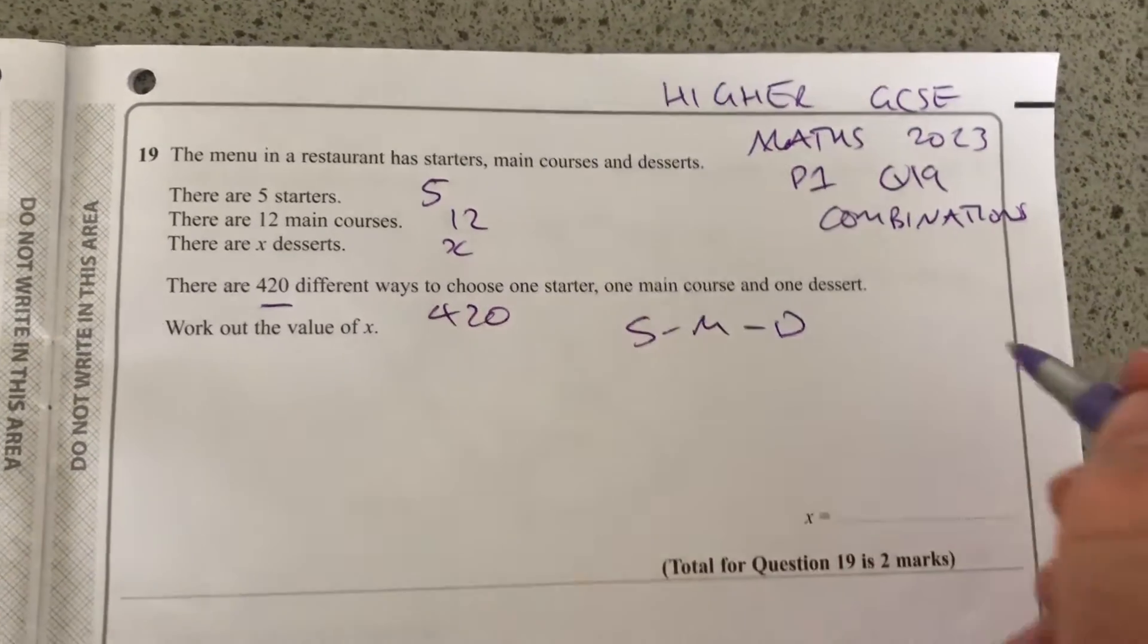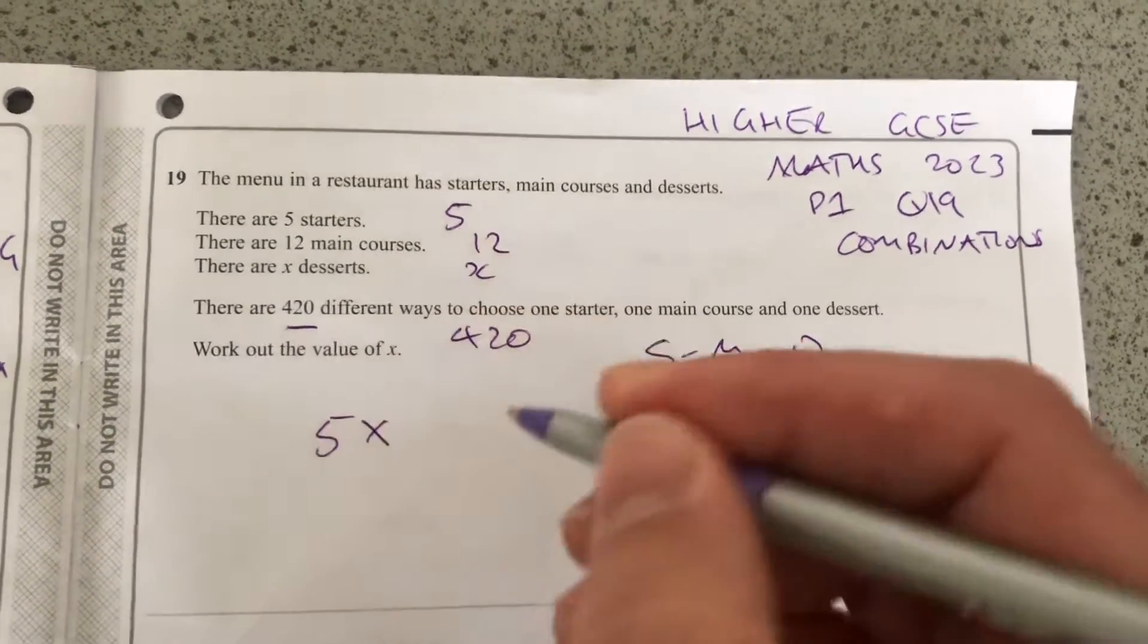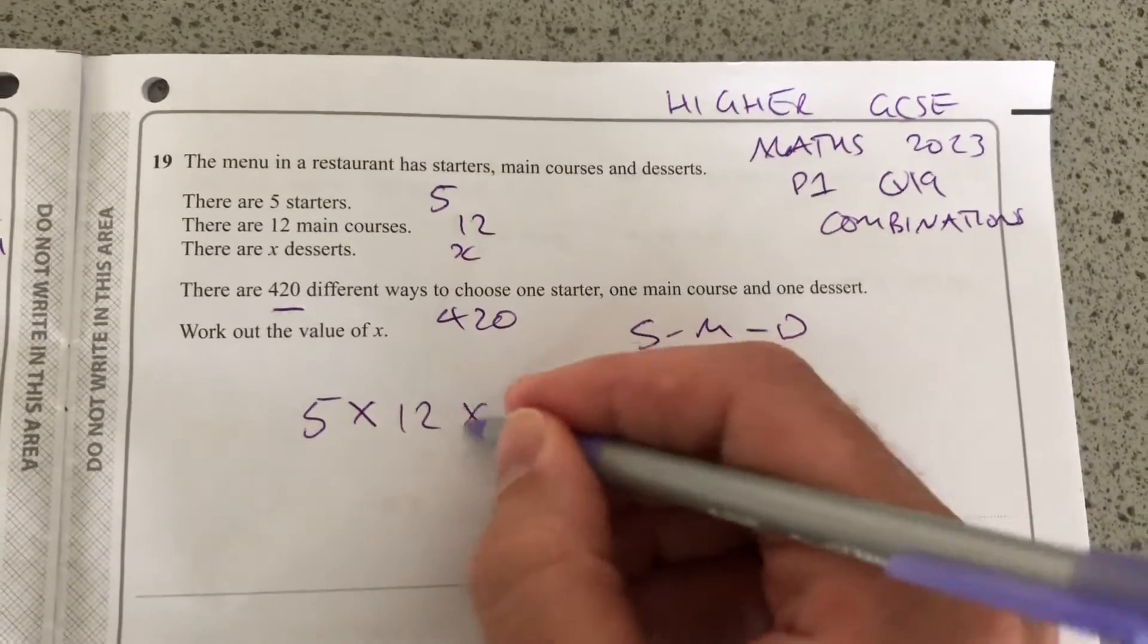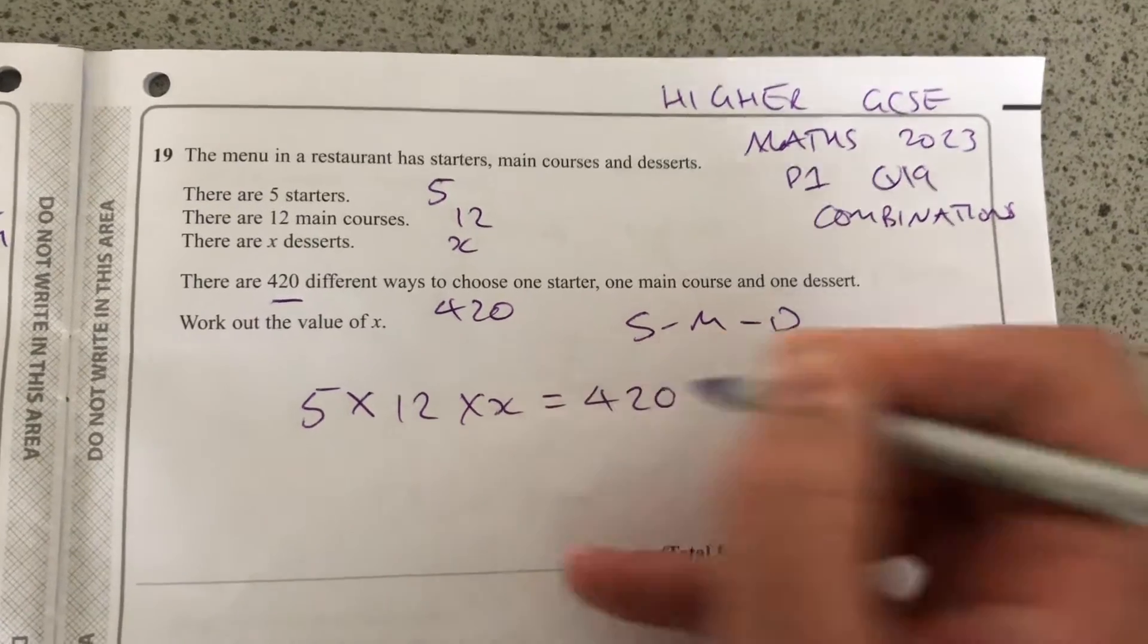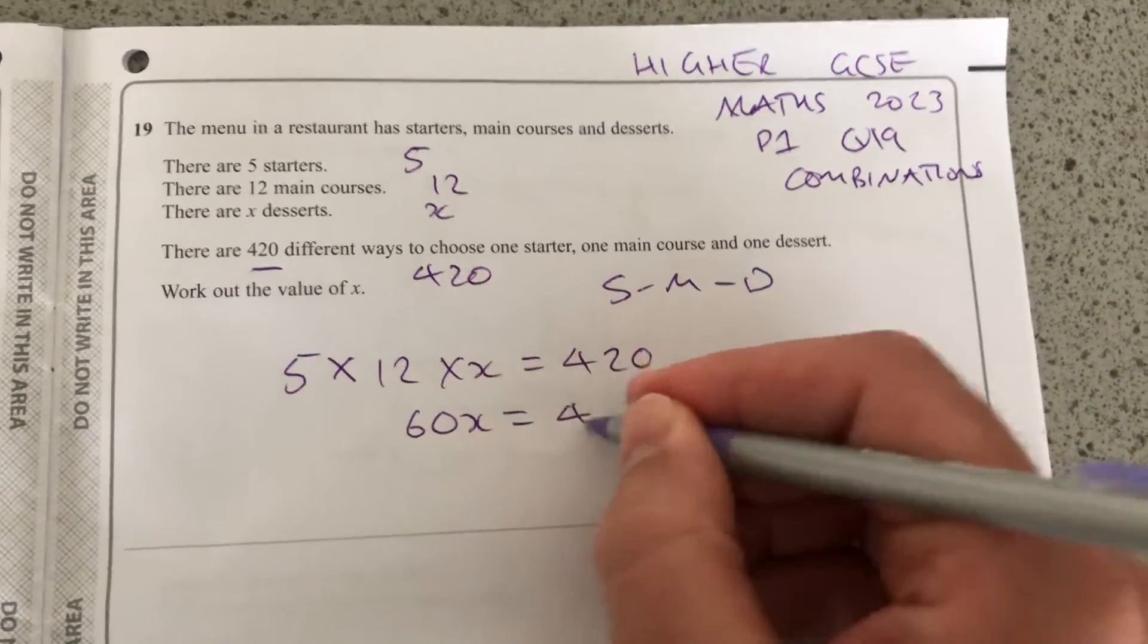So we're going to work out the value of x. So if we set up that equation, 5 starters times 12 main times x will equal 420. 5 times 12 is 60. 60x is 420.